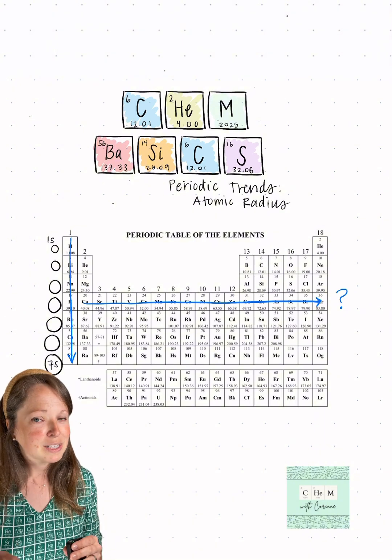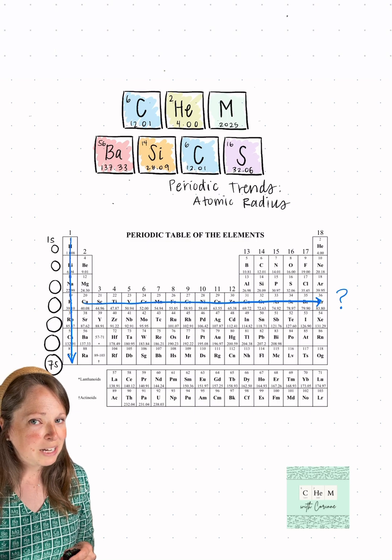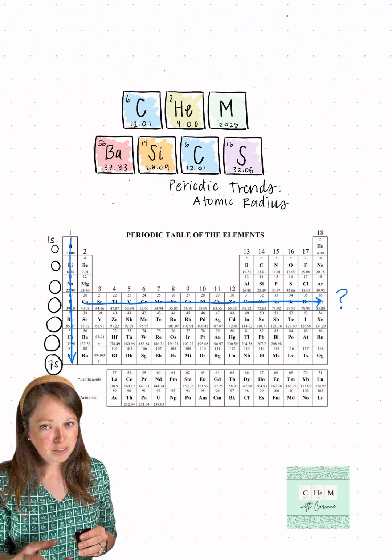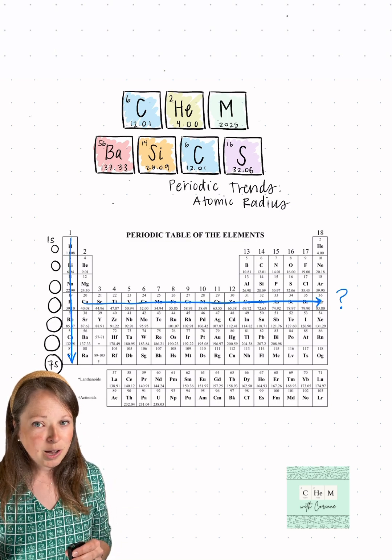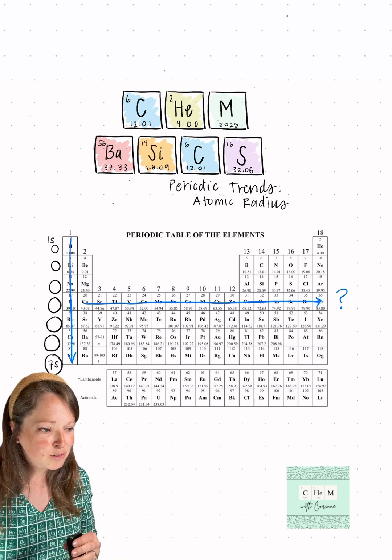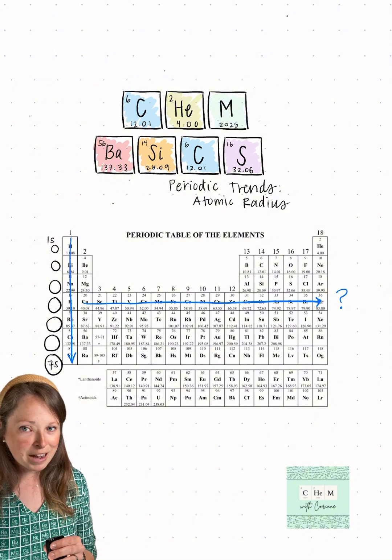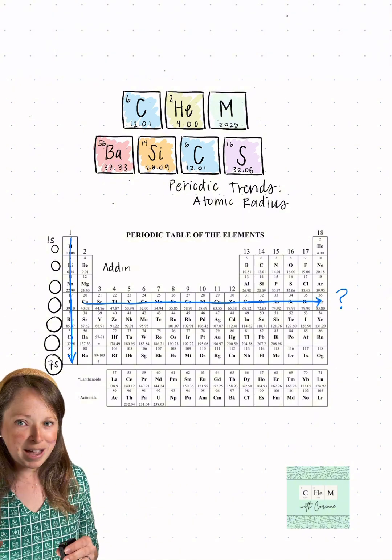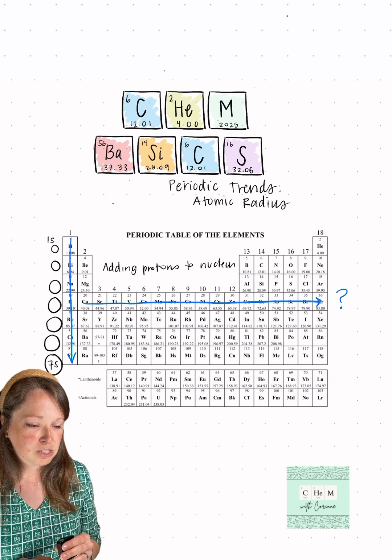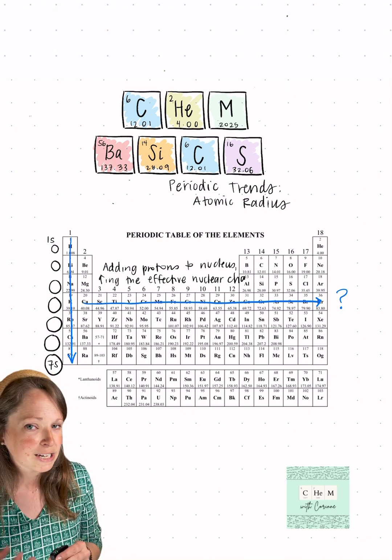Now let's think about how that impacts the nucleus. As I add more positively charged protons to the nucleus, the magnitude of positive charge in the nucleus increases. We call this the effective nuclear charge. As the magnitude of positive charge in the nucleus increases, we know that forces of attraction are based on the magnitude of charge and the distance between charges. So as the magnitude of charge increases, the Coulombic attraction increases.